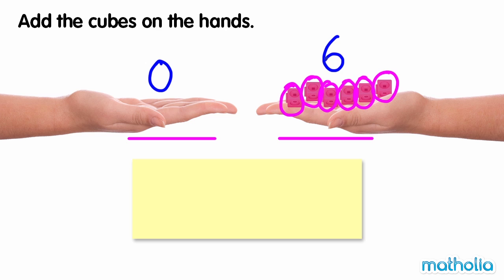There are six cubes altogether. So zero plus six equals six.